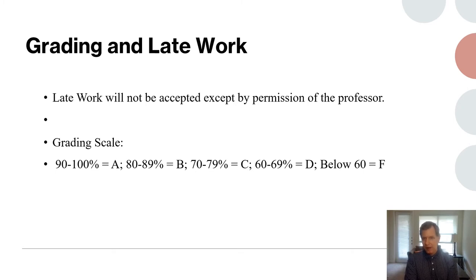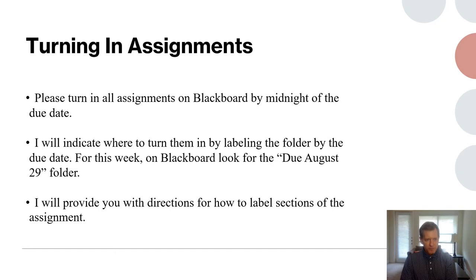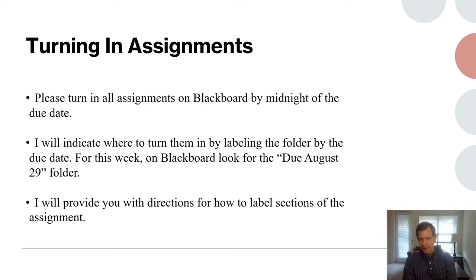You can see we go on a 10-point grading scale. Please turn in all assignments on Blackboard by midnight of the due date. August 29th is when our first assignment is due, so that means it's due by midnight August 29th. When something is due September 6th, that means it's due by midnight of September 6th.